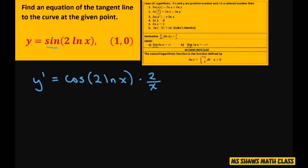Alright, now once you have that, we need at point 1 comma 0. So plug in your 1 and let's see what we get. We're going to get cosine of 2 times ln of 1 times 2 divided by 1. Well ln of 1 is 0.